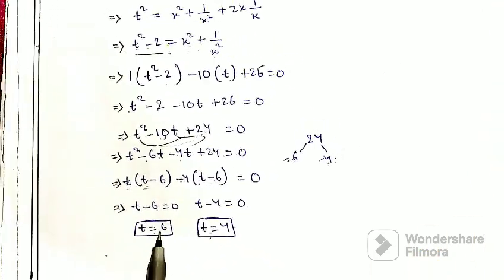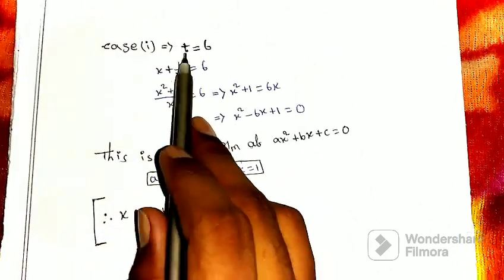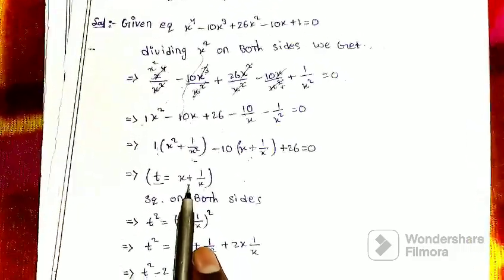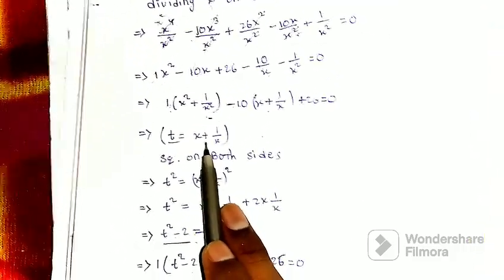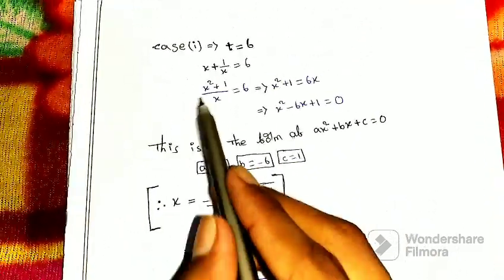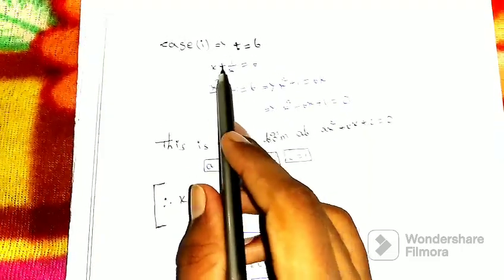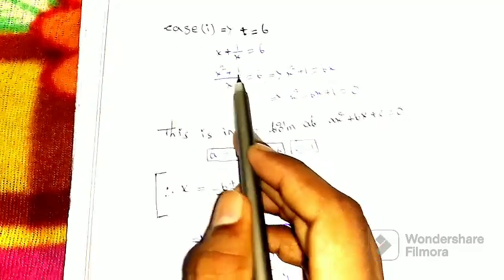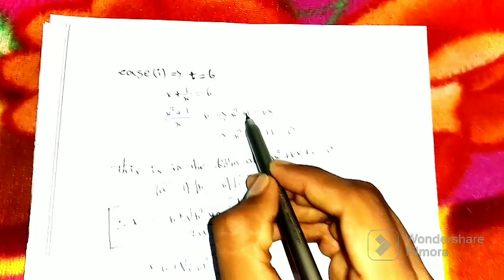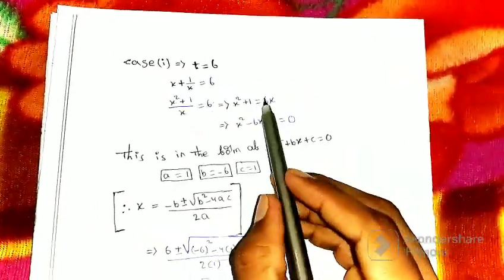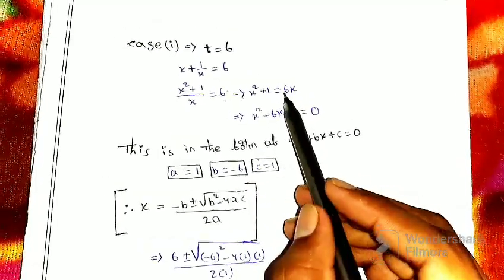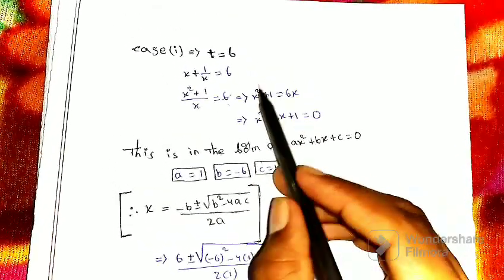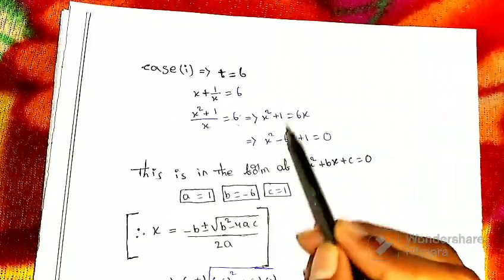Case 1: t is equal to 6. Since t equals x plus 1/x, we have x plus 1/x equals 6. Multiplying both sides by x gives x² plus 1 equals 6x. Moving everything to one side: x² minus 6x plus 1 equals 0.